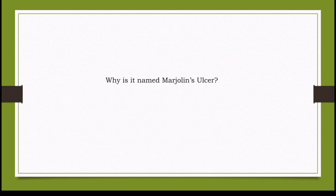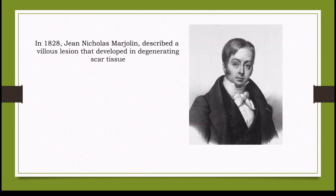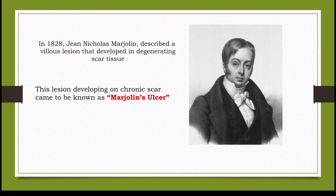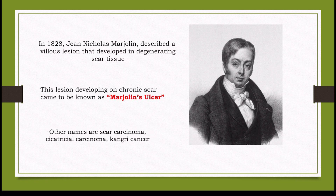Why is it called Marjolin's ulcer? In 1828, Jean-Nicolas Marjolin described a lesion that developed in degenerating scar tissue. Although others had previously described cancers developing in burn scars, the name Marjolin's ulcer was given to these malignancies. Other names include scar cancer, cicatrix carcinoma, and Kangri cancer.